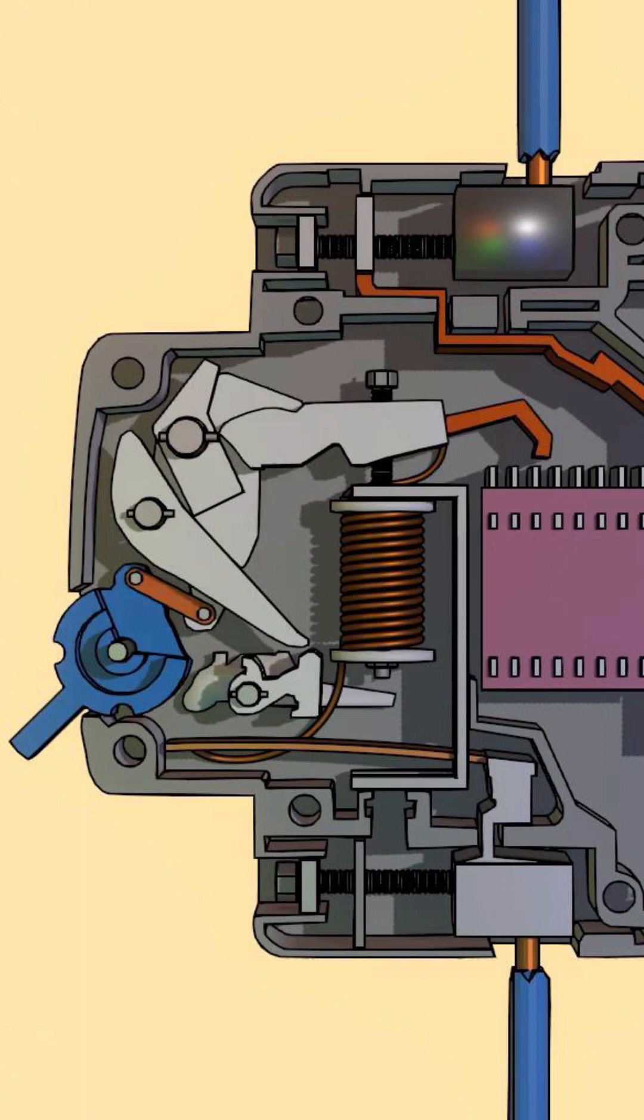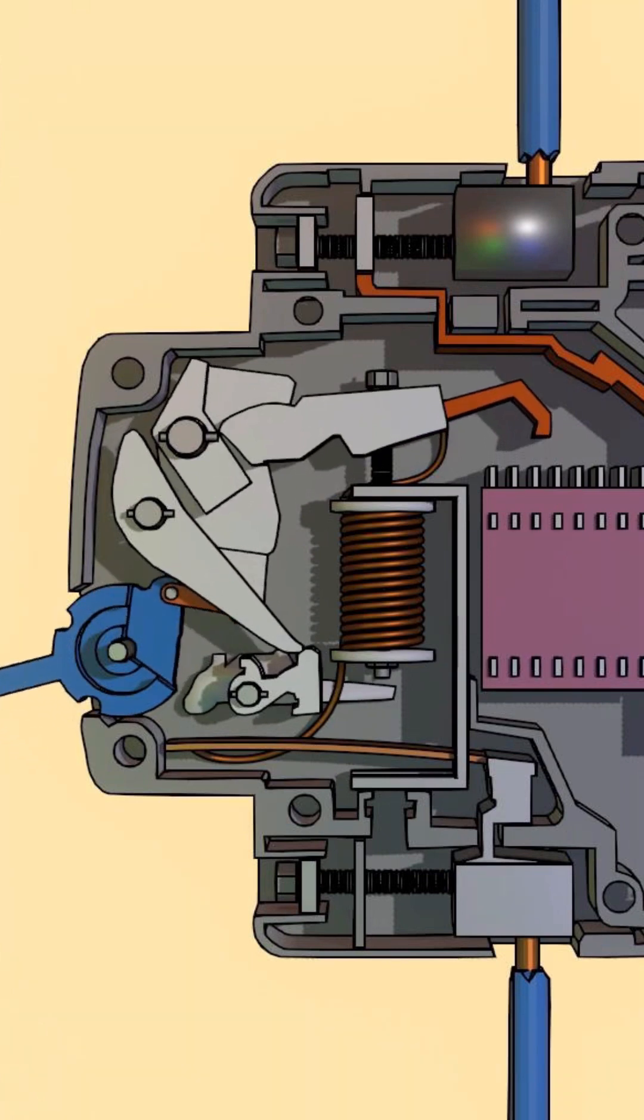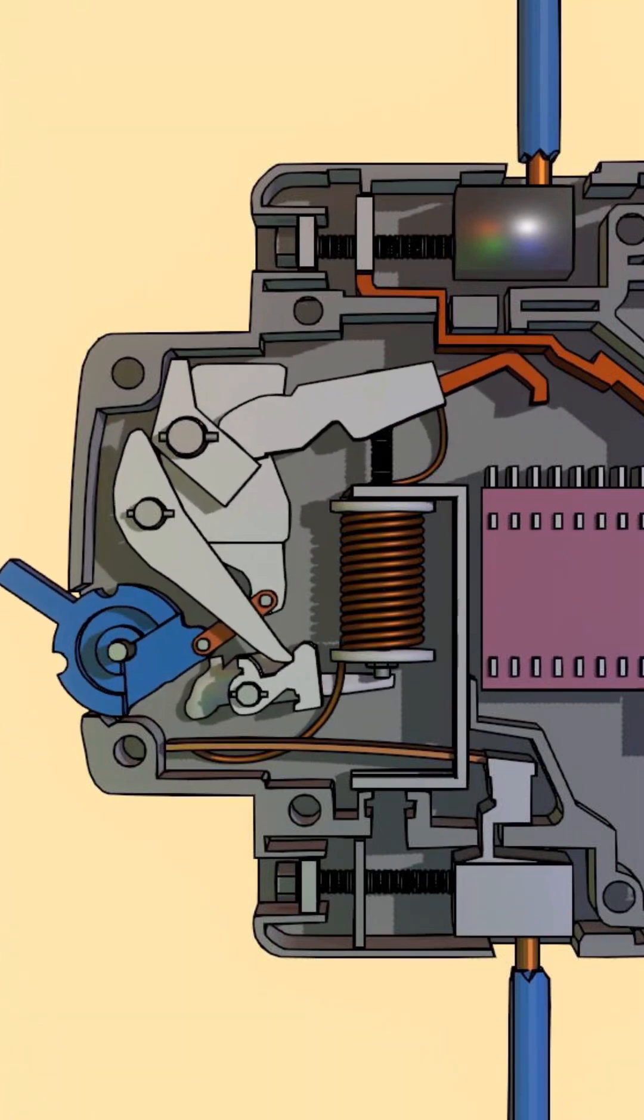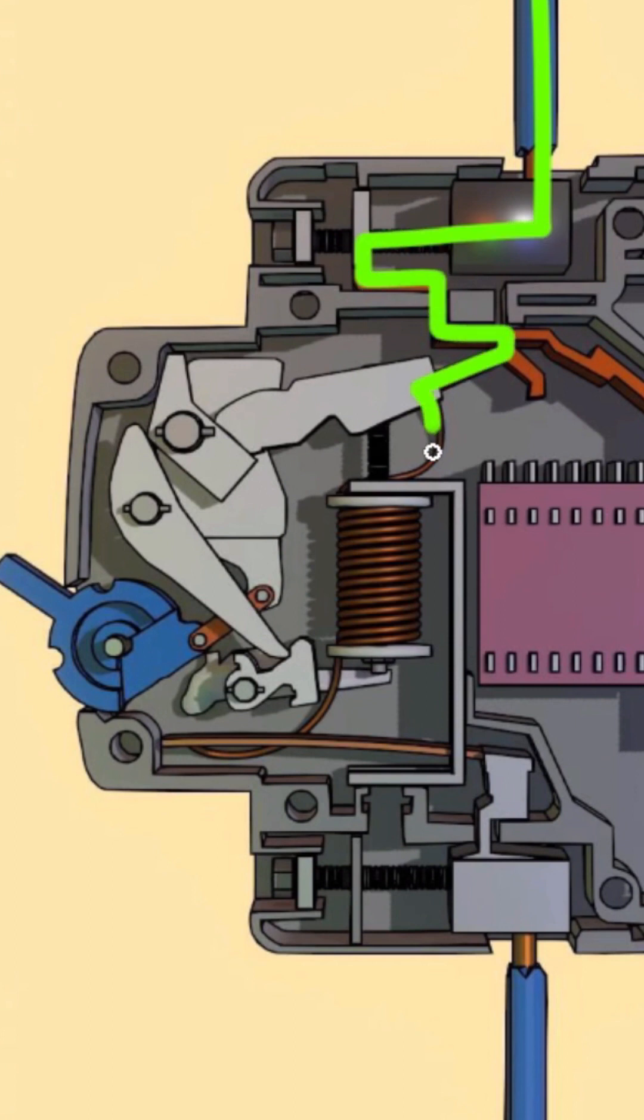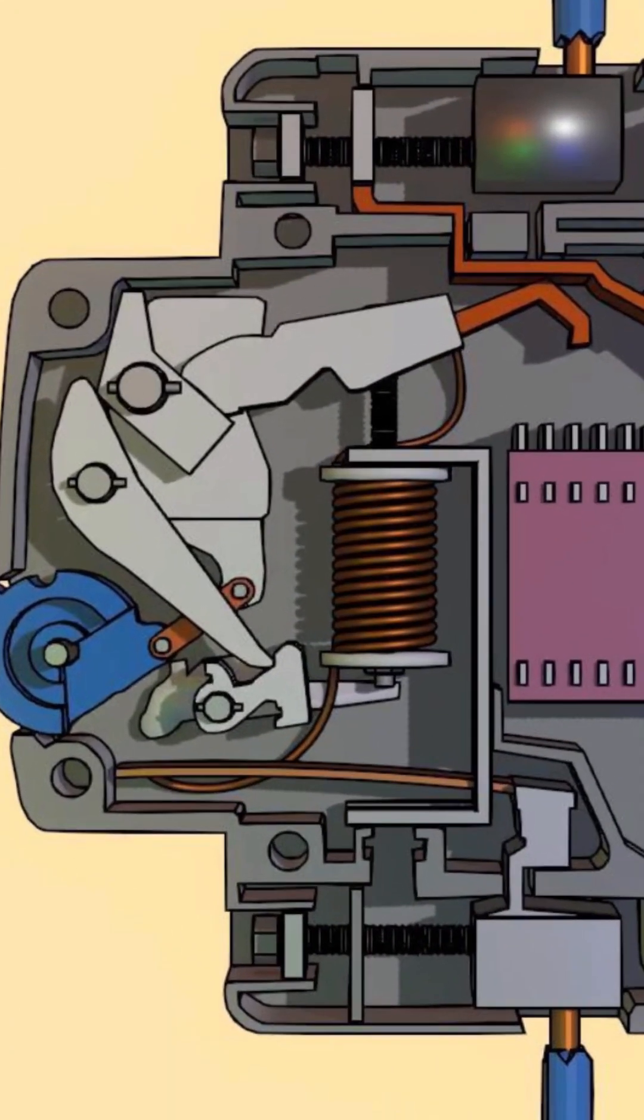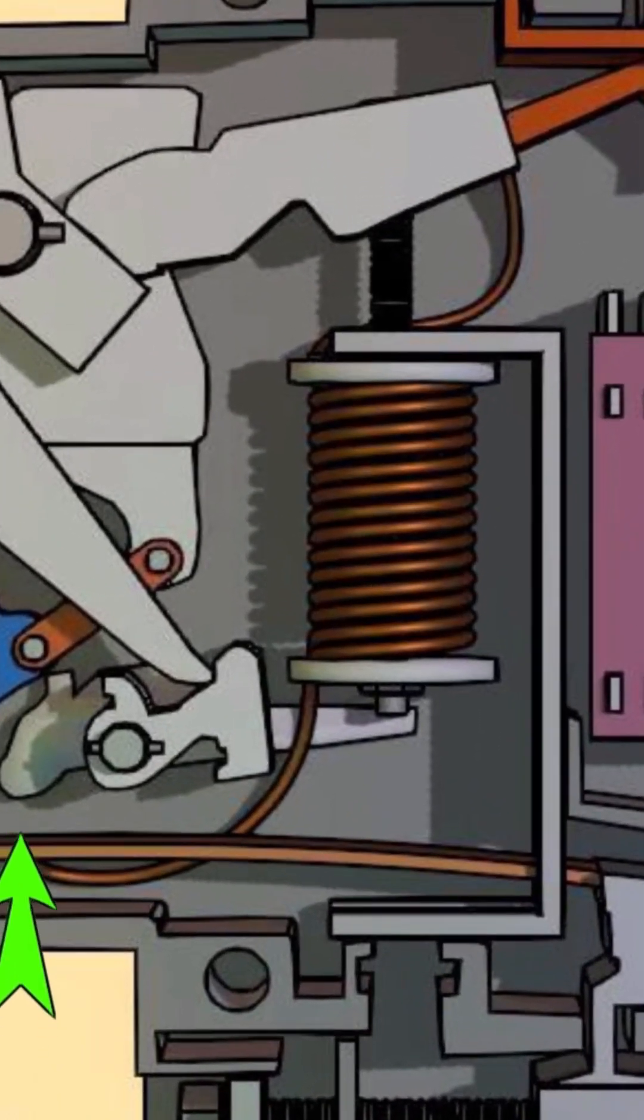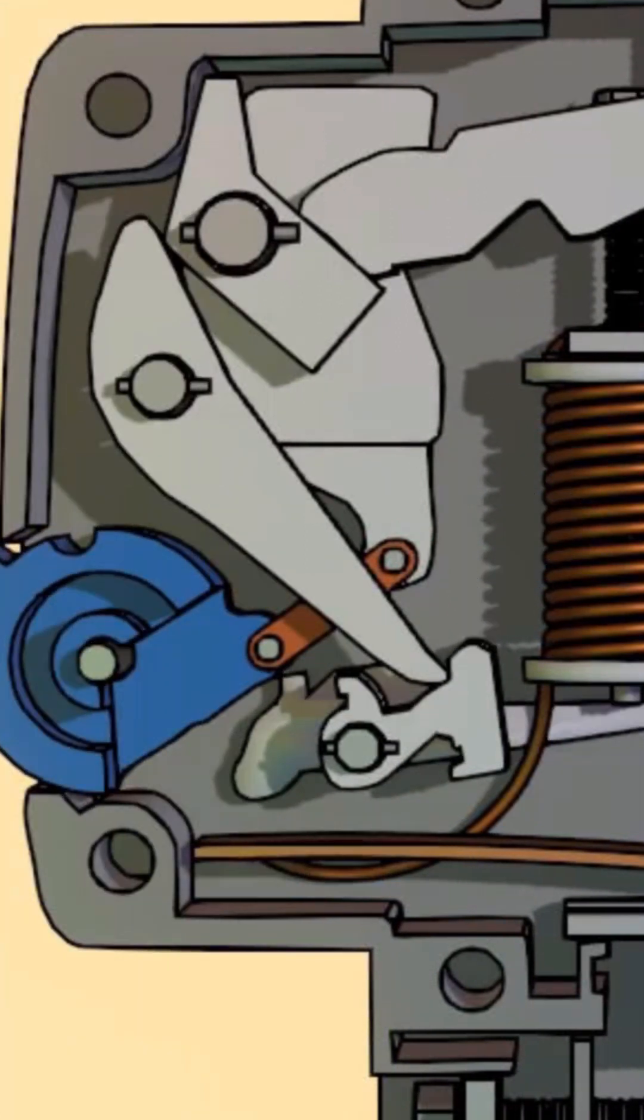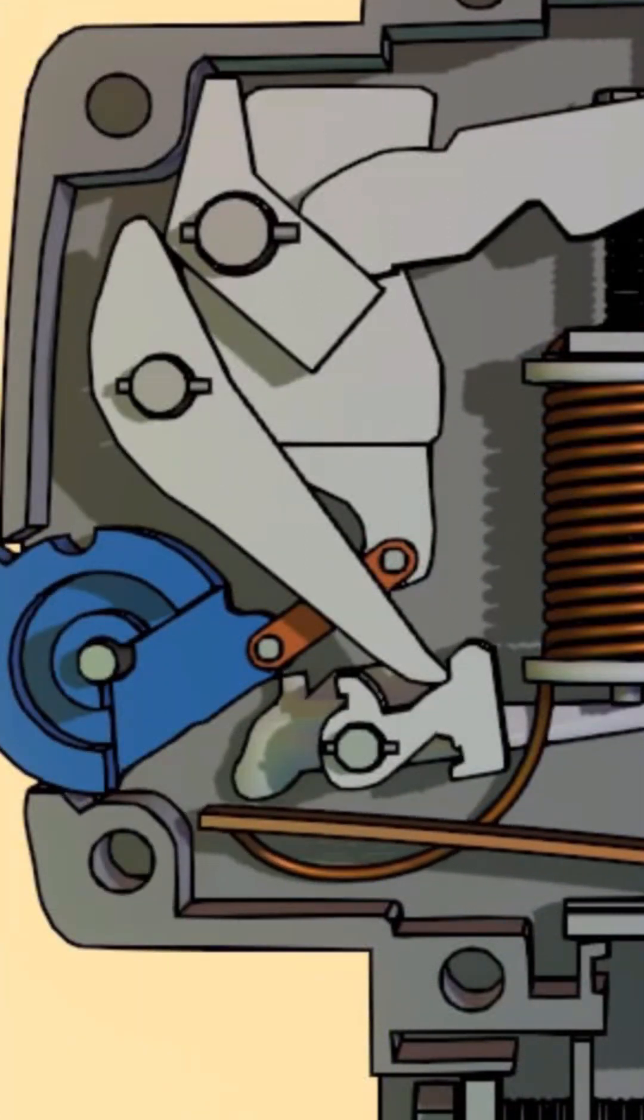Now if there is an overloading condition, the current beyond the limit flows through this path and the bimetallic strip, due to high current, heats up and bends. It pushes this point and as soon as it does, this spring-loaded lever is released. The mechanism rotates and the moving contact moves away from the fixed contact, breaking the circuit under overloading.